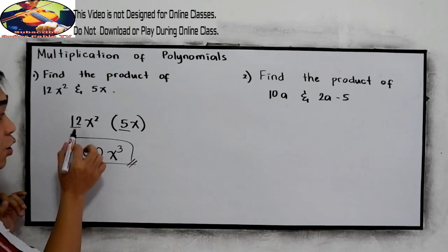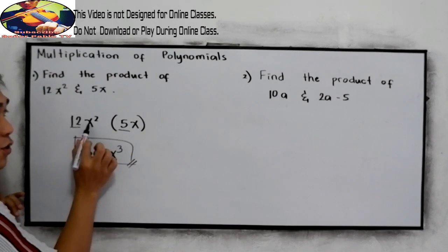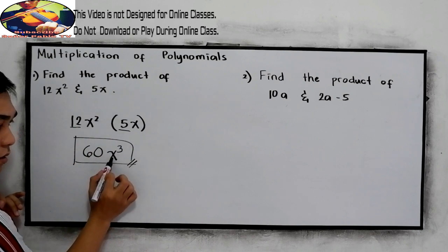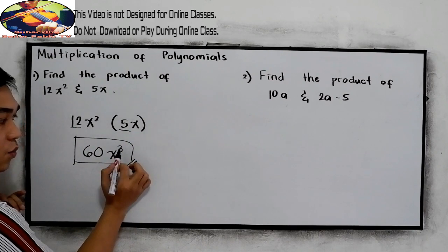Again, let us repeat. 12 times 5, that is 60. So copy the variable, then add the exponent, 2 plus 1, we have 3.